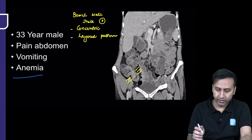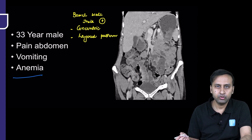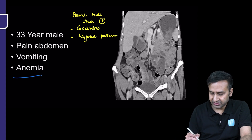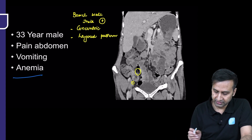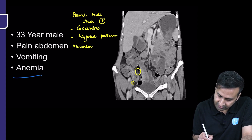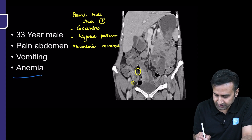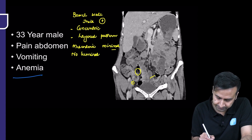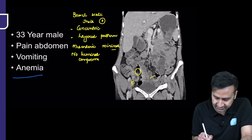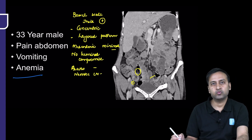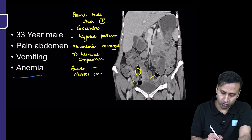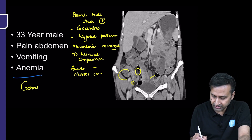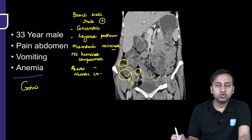Looking adjacent to the thickened bowel: no significant lymphadenopathy. Mesenteric fat stranding is very minimal — some can be seen here and there but largely absent. No luminal compromise, no bowel obstruction, no ascites, and no necrotic lymph nodes. Our diagnosis was Crohn's disease, supported by a normal cecum and normal ascending colon.